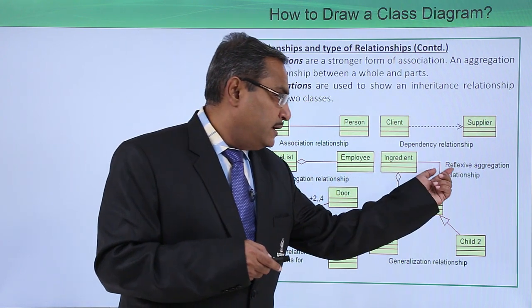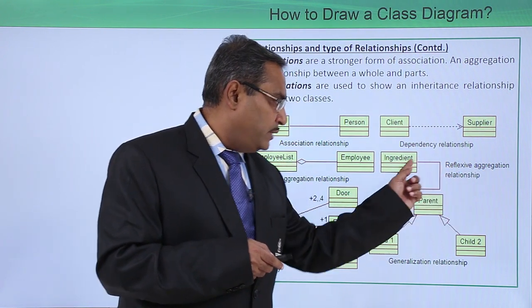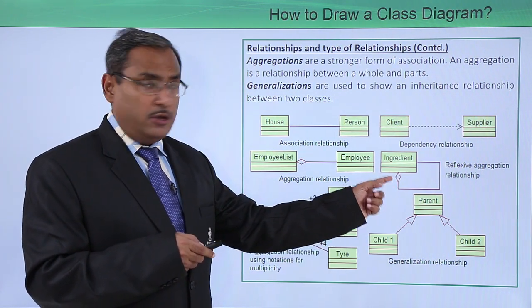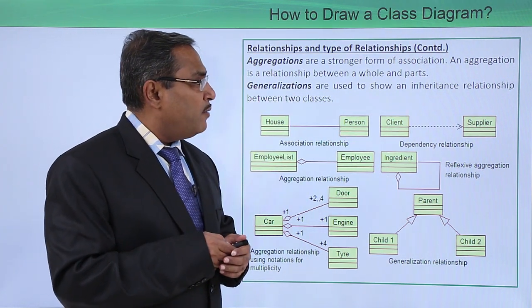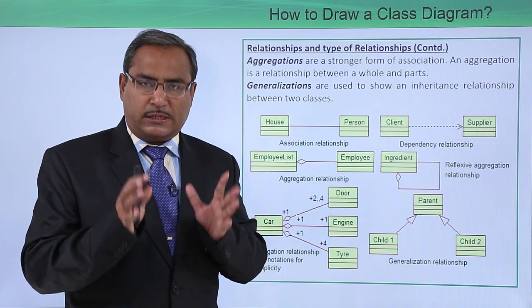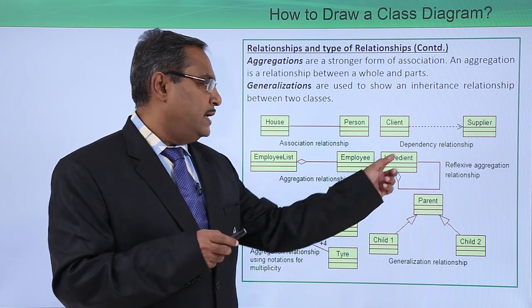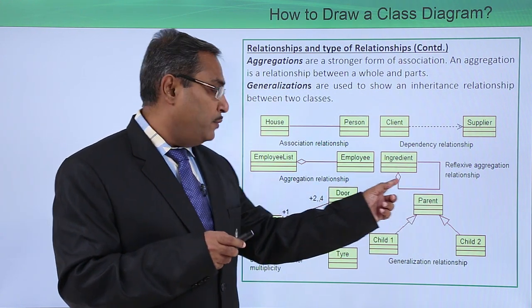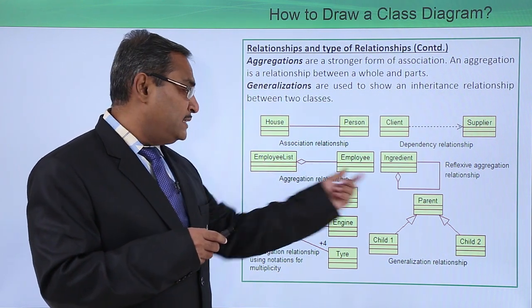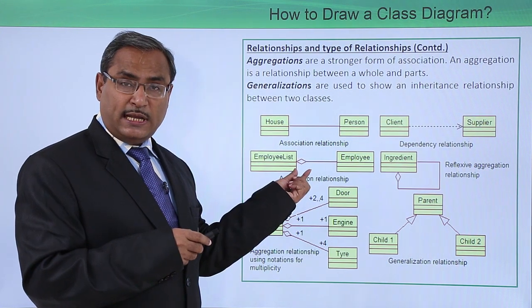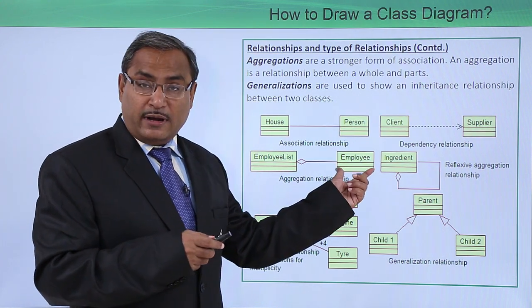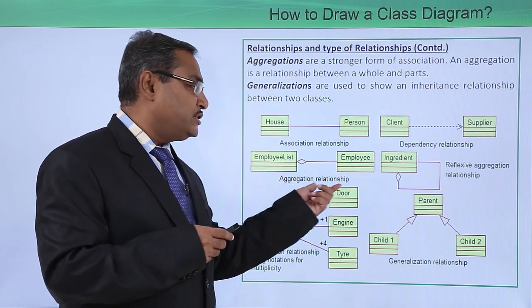And here we are having this reflexive aggregation relationship. So here you can find, so this is our aggregation. So here we are finding that this particular symbol is for the aggregation. So what is the aggregation? Aggregations are the stronger form of association. And aggregation is the relationship between a whole and parts. So that is the way where we are having this aggregation type of relationship. So here we are having this employee list which is consisting of multiple employees. So aggregation has been denoted here. This symbol has been denoted. So that means this employee list is having aggregated of this employee class objects here. And this is known as the aggregation relationship.